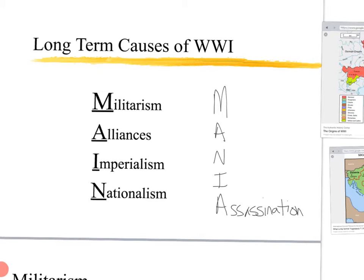We are going to get into the long-term causes and the short-term causes of World War I — why World War I all of a sudden happened. Right at the end of the age of imperialism, the war to end all wars is going to break out. There's a really simple acronym we're going to use to remember. It's going to spell MAIN.